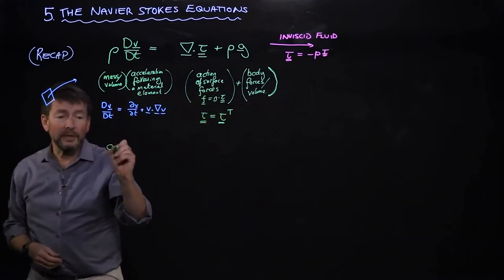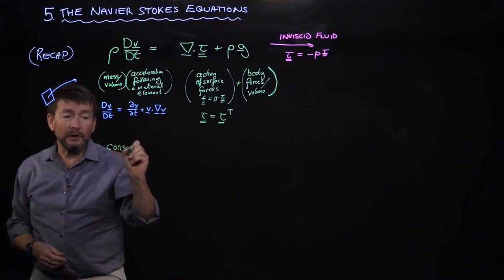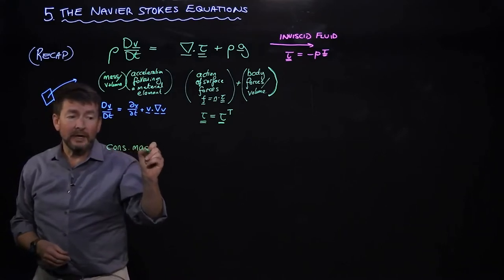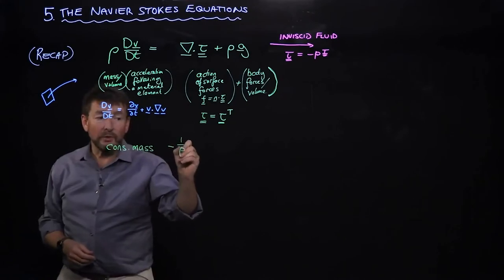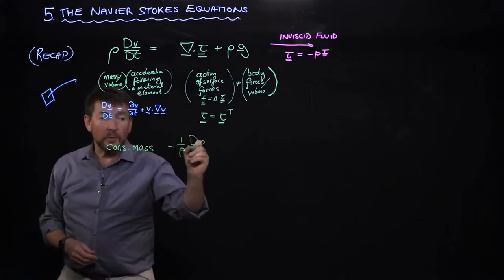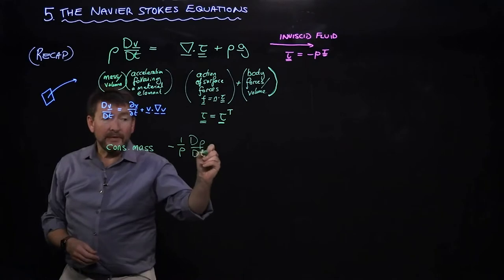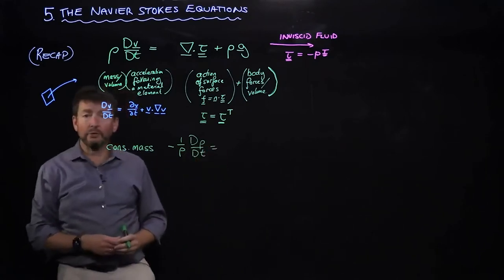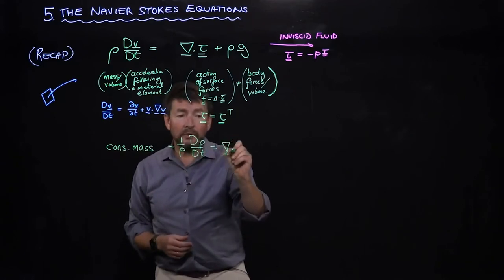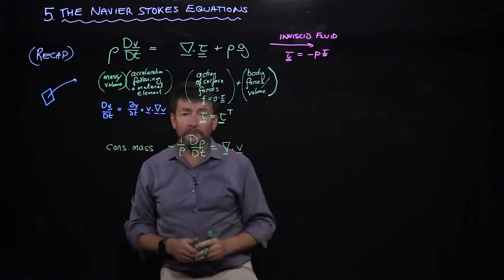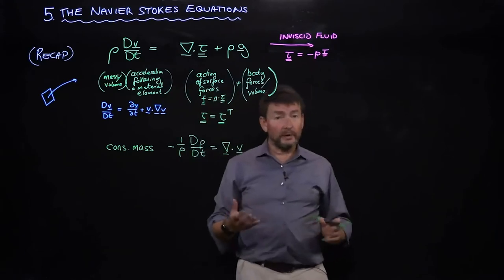We might combine this with conservation of mass, but that will only give us at most one additional equation. That's a statement about fractional changes in density following a material element being associated with the divergence of the velocity. We still don't have enough equations.